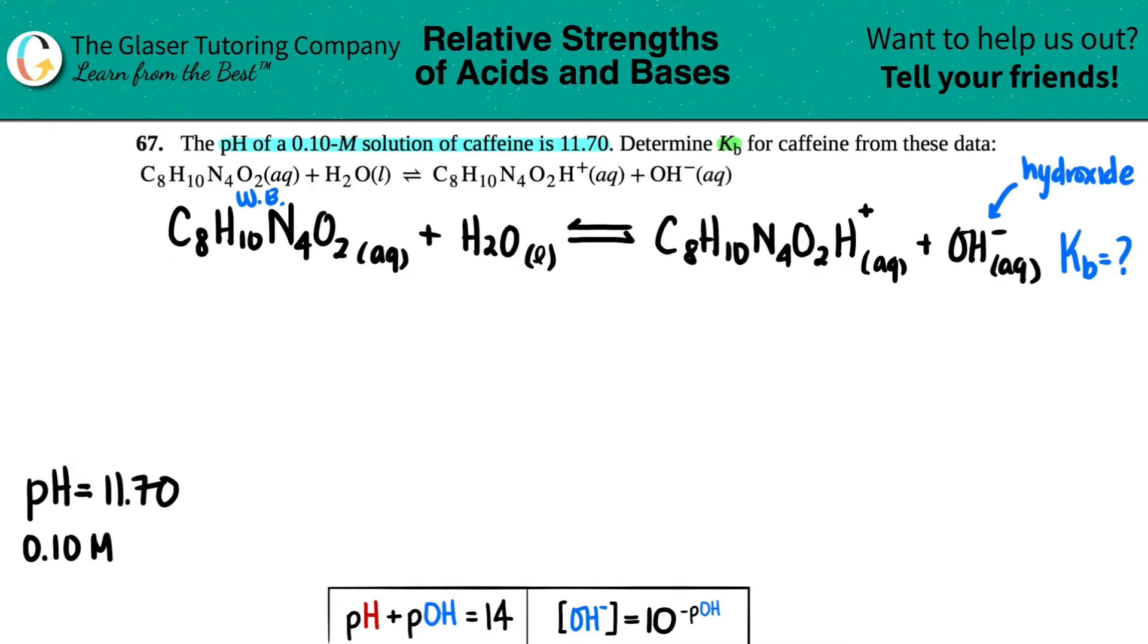So the 0.10 molar of the caffeine, which is the weak base, the C8H10N4O2. That was initial. So maybe I'll just highlight that. This is initial.